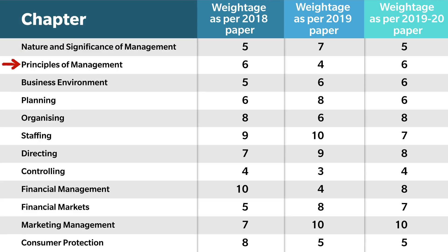Principles of Management, which is the second chapter: in 2018 the weightage was 6, in 2019 it was reduced to 4, and in the sample paper there are total 6 marks. For Business Environment: in 2018 it was 5 marks, in 2019 the board had 6 marks, and in the sample paper there are also 6 marks.